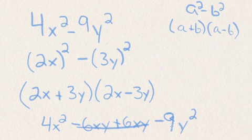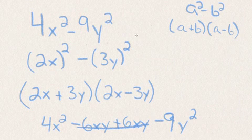3 times 3 is 9 and y times y is y squared. And you see we have 4x squared minus 9y squared is the same as our question. So we factored it correctly.